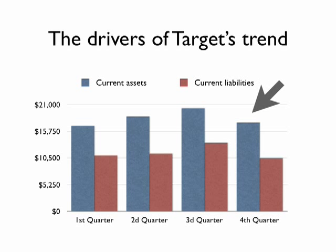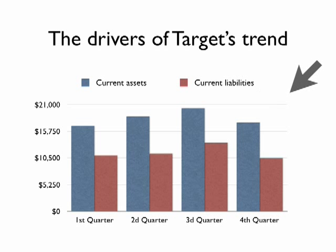Receivables and inventories fall in the strength of the year-end surge in sales in the fourth quarter. Payables fall and short-term debt is completely repaid, bringing the current ratio to its annual peak.